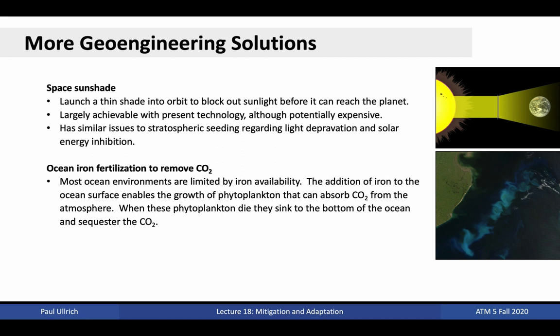A third geoengineering solution is ocean iron fertilization. This strategy would involve dumping iron filings into the near-surface ocean in certain regions whose local ecology is iron-limited. This would drive a rapid phytoplankton bloom, which would draw carbon dioxide out of the atmosphere. When the phytoplankton died, they would sink to the bottom of the ocean and effectively sequester the carbon. Studies are ongoing on the potential magnitude of this effect and the dangers that remain for ocean ecosystems.